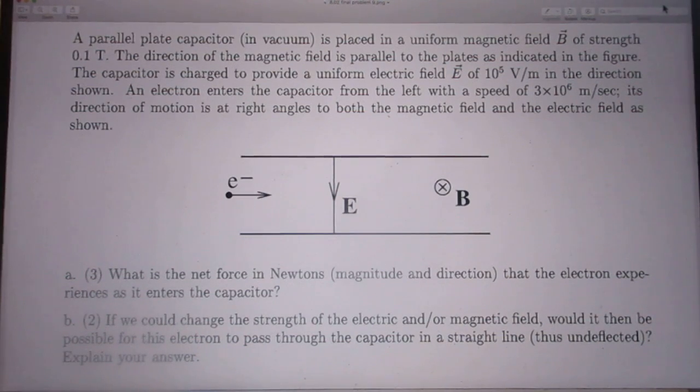The capacitor is charged to provide a uniform electric field E of 10 to the 5 volts per meter in the direction shown.